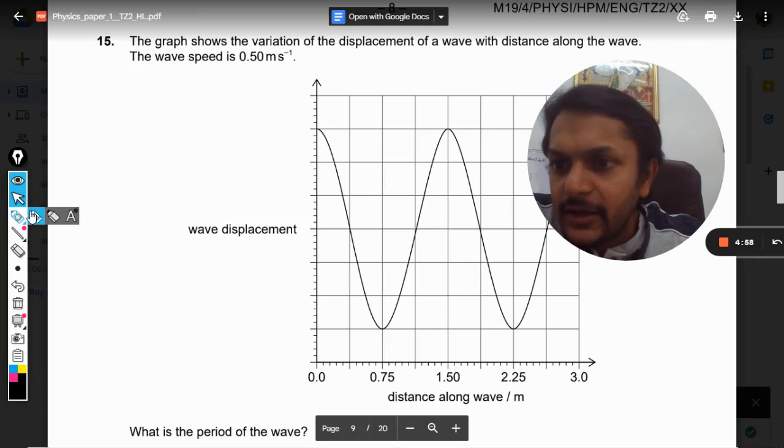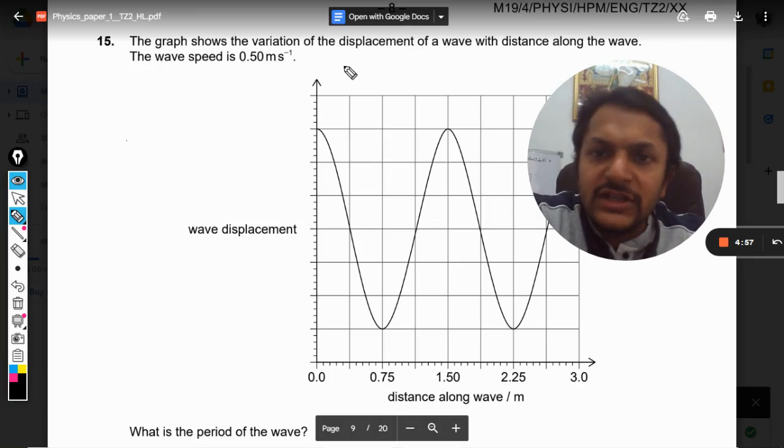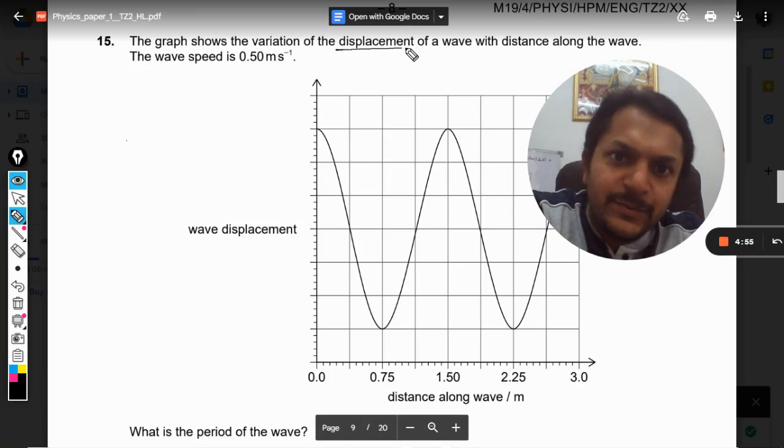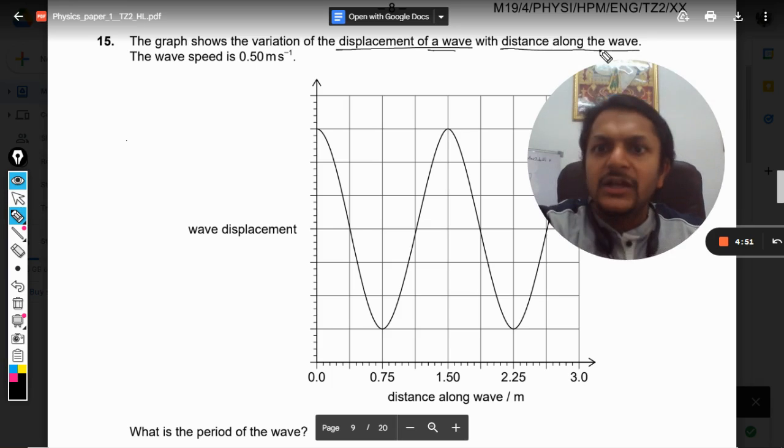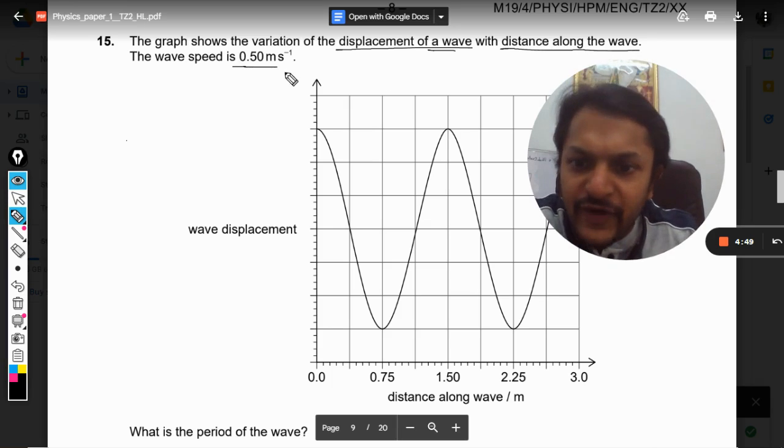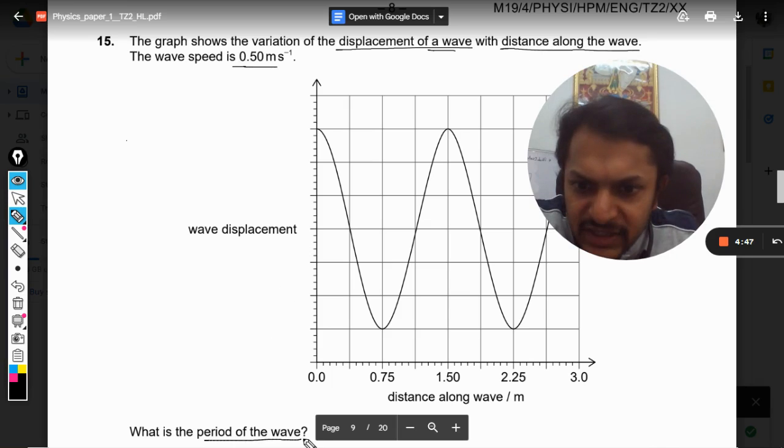Okay dear students, let us see. The graph shows the variation of displacement of a wave with distance along the wave. The wave speed is given as 0.5 meters per second. What is the period of the wave?